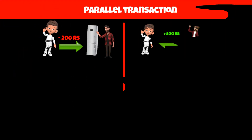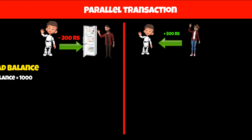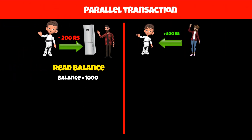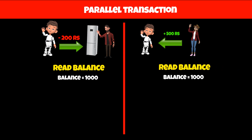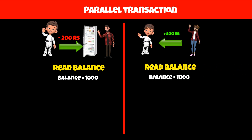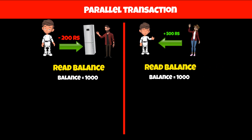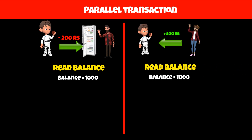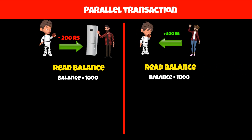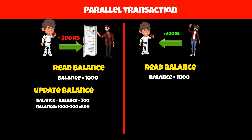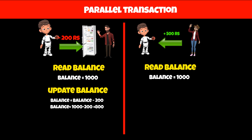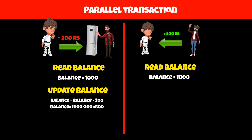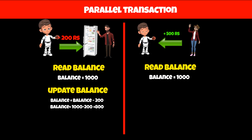The first transaction will read the current balance value, which is 1000 rupees. Then the second transaction will also read the current balance value, which is still 1000 rupees. Now in the second step, the first transaction will subtract 200 rupees from the balance because Ross paid it to the shopkeeper, so the new balance will be 800.